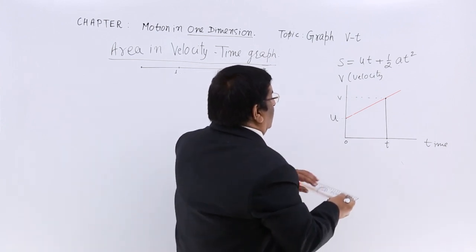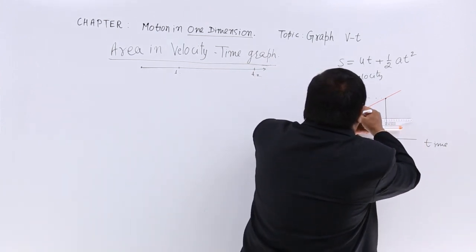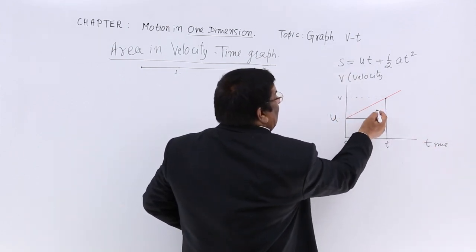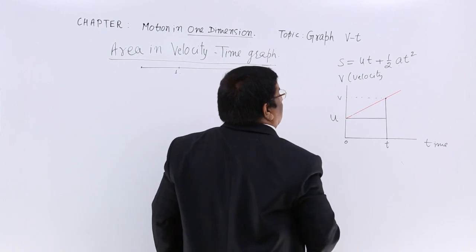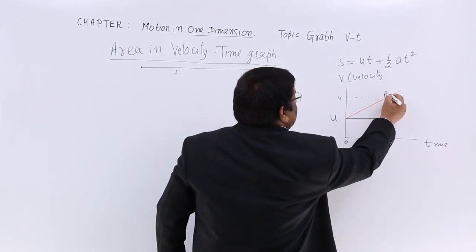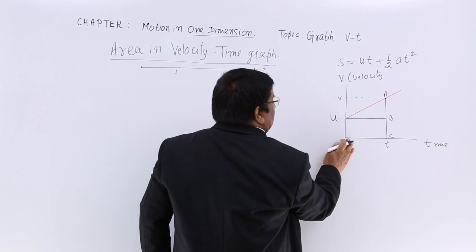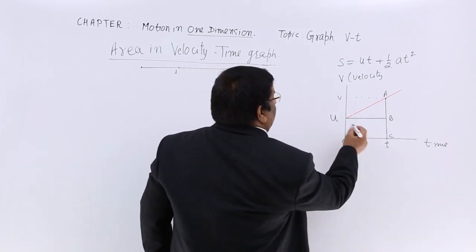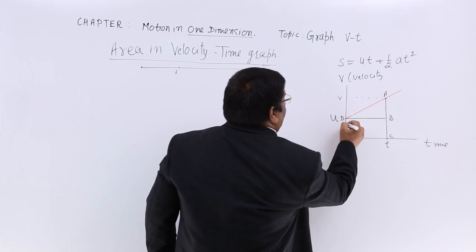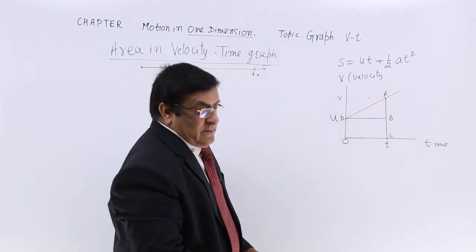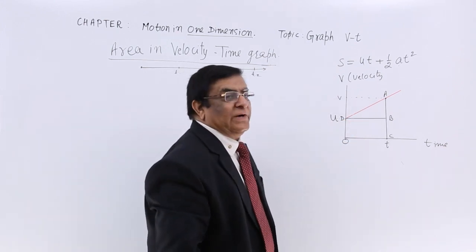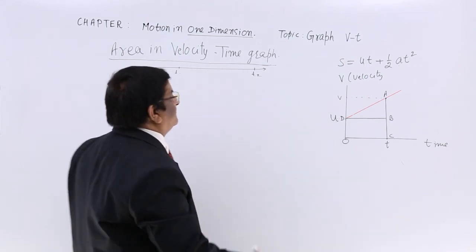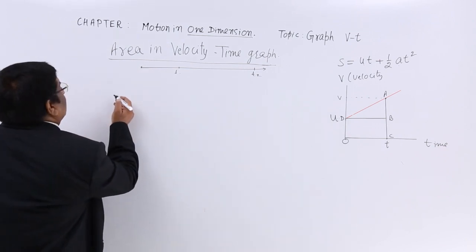Now we do a construction here and make a rectangle here and a triangle here. Let us give certain names: this is A, this is B, this is C, this is O. A, B, C - let us write it D. Now what is given by the displacement? Who gives the displacement? Area. So we have to calculate area.